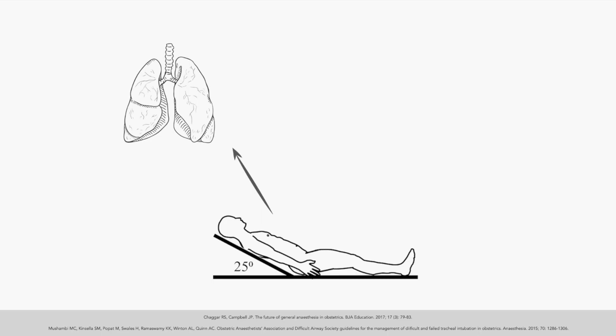As the patient is ramped, there's less upward displacement of the diaphragm by the gravid abdomen. This in turn increases the functional residual capacity, and this increased FRC allows for improved pre-oxygenation and a prolonged apnea to desaturation time. The second benefit is improved laryngoscopy. It is easier to insert the laryngoscope with less interference of breast tissue, and there's also improved views of the airway as the axes align better.